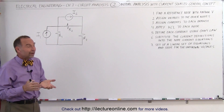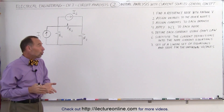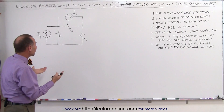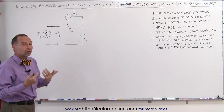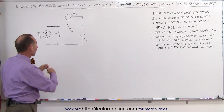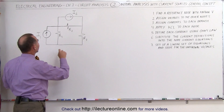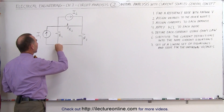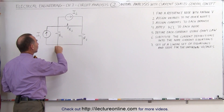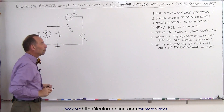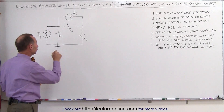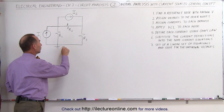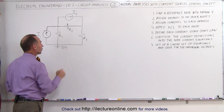Following our steps, we first find the reference node. The best thing to do is assume that some node is attached to ground. We'll go ahead and attach this node to ground so that becomes our reference node, and we note that the voltage there is zero volts.